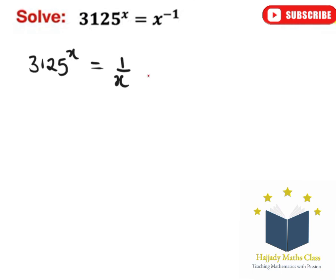So the next step is to raise both sides to the power of 1 over x. And don't forget the rule of indices that says a to the power of n is the same thing as saying a to the power of m multiplied by n.